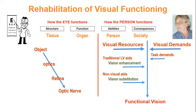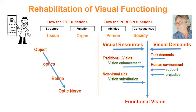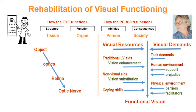We also need to consider the task demands. For example, when we provide a student with a magnifier, we practice vision enhancement. When we provide large print, we modify the task. When we provide talking books, we practice vision substitution. Beyond these factors, we must also consider the environment — the human environment can be either supportive or prejudiced, and the physical environment can provide barriers or facilitators. Finally, we must consider the individual's coping skills, which may affect how well all of our interventions are received and adopted. In summary, on the right side, the number of variables and their interactions are much more complex than on the left.